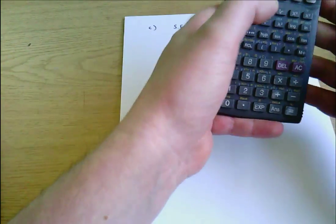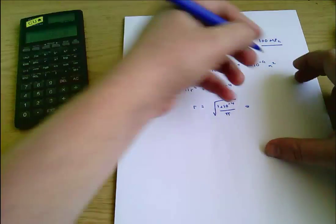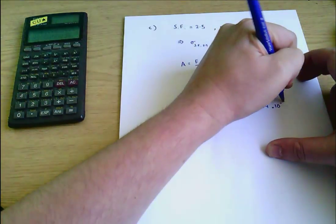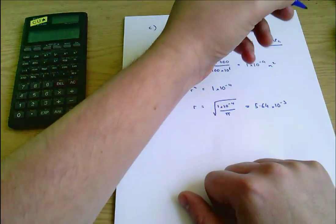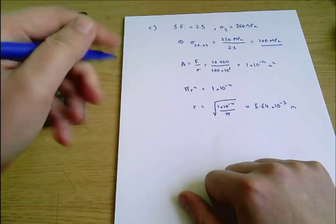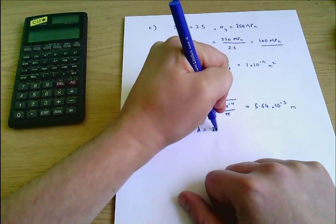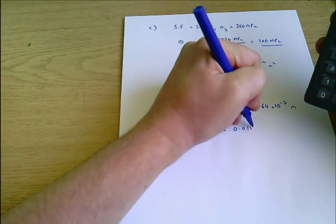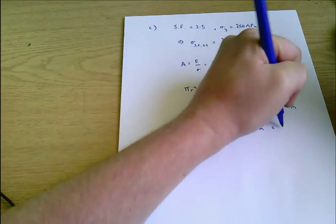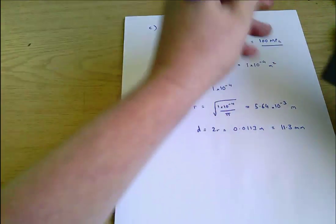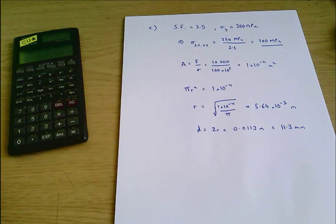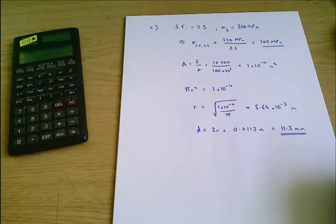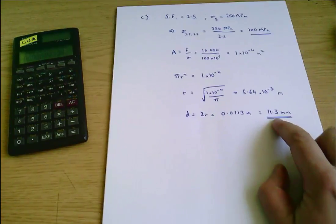The square root of that is 5.64 times 10 to the minus 3 meters and diameter equals 2r equals 0.0113 meters. So we've increased our safety factor which means we want everything to be a little bit stronger so it makes sense that our diameter has gone up slightly. In part A it was 10.1 millimeters now it's 11.3 millimeters.